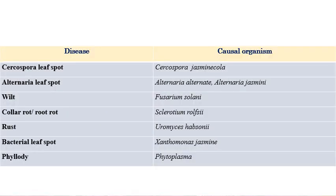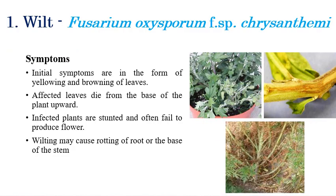The important diseases of chrysanthemum include: Cercospora leaf spot, caused by Cercospora jasminicola; Alternaria leaf spot, caused by Alternaria alternata and Alternaria jasmine; wilt, caused by Fusarium solani; collar rot or root rot, caused by Sclerotium rolfsii; rust, caused by Uromyces hobsonii; bacterial leaf spot, caused by Xanthomonas jasmine; and phyllody, caused by a phytoplasma.